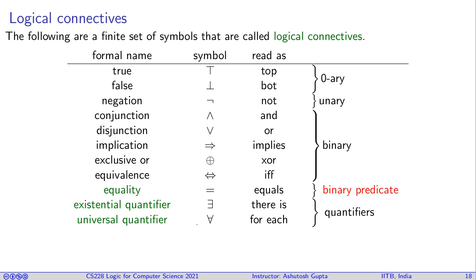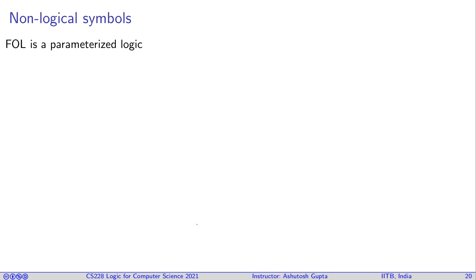Equality is a binary predicate, and these two new things are called quantifiers. First-order logic is a parameterized logic, so there is not one first-order logic, there are many first-order logics, parameterized with function symbols and predicate symbols or relational symbols.